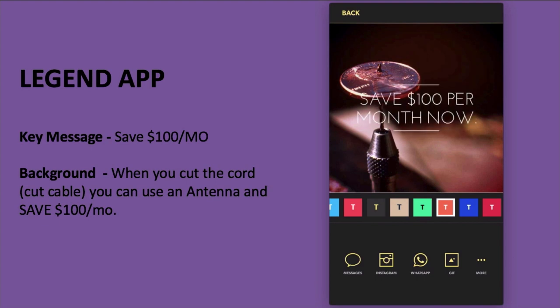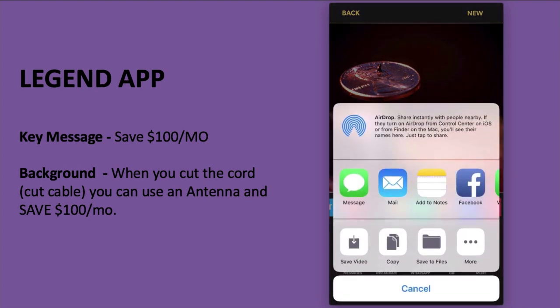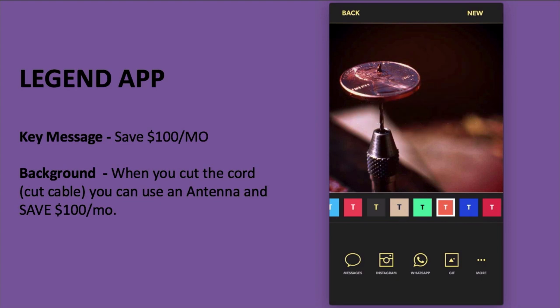Once you're happy with your design, just click on 'more' at the bottom and it's going to create the video for you. Legend app creates a video that's about six seconds, though some tools create longer videos — you can always trim those to five, six, or seven seconds. You can save this video on your phone and use it on social media channels like Facebook, Instagram, Twitter, or as a pre-roll ad for YouTube advertising.